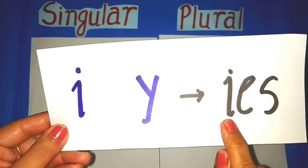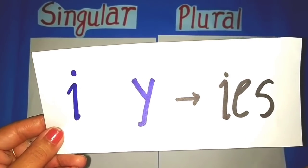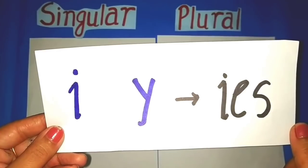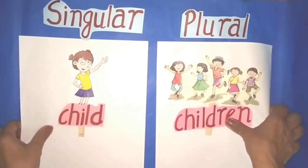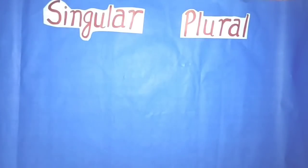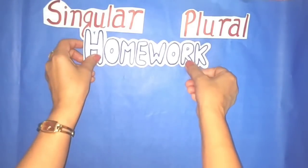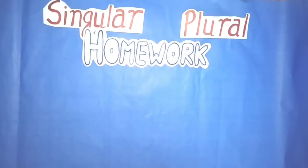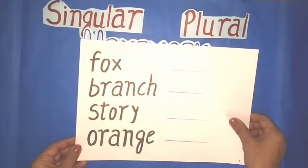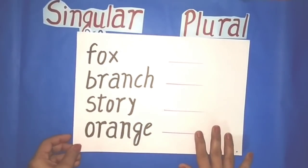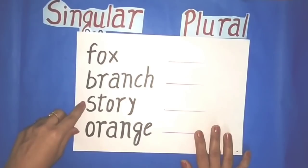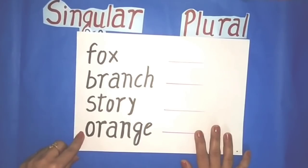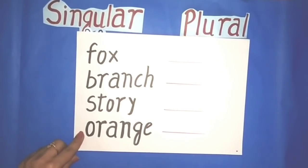Students, the nouns which end with I and Y — for such nouns we write IES at the end of the word. I hope you have understood. Now it's time for your homework: write the plural for these words — fox, branch, story, orange. Thank you, see you soon!